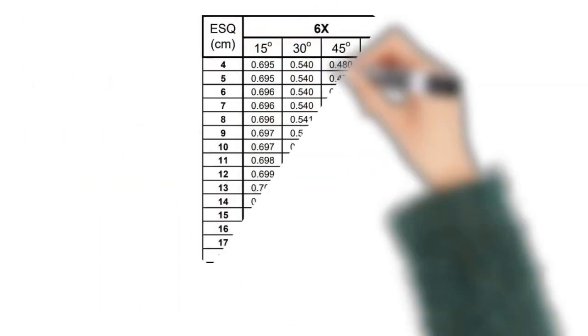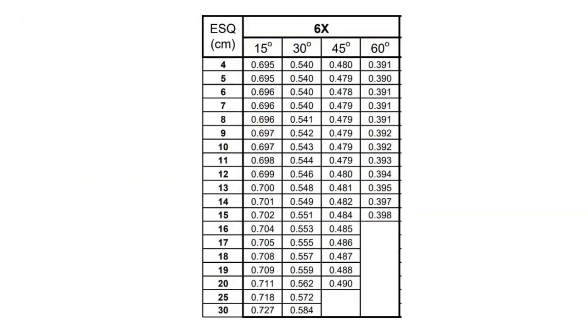Here's another example of a wedge factor table. This time it shows all these different wedge angles—15, 30, 45, 60 degrees—at all these different field sizes. You can see that the wedge factor gets smaller and smaller as the wedge angle gets bigger.